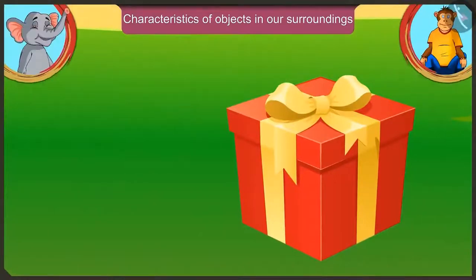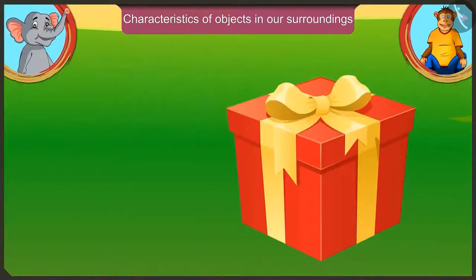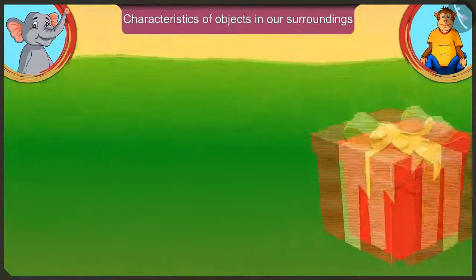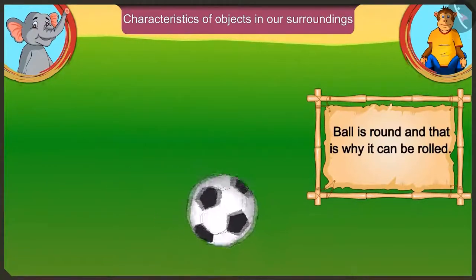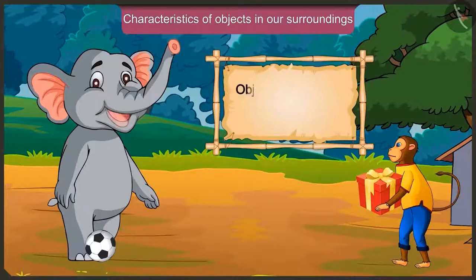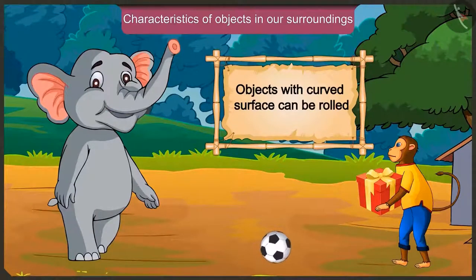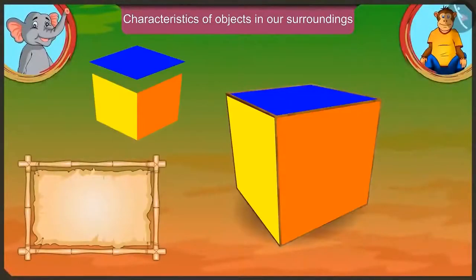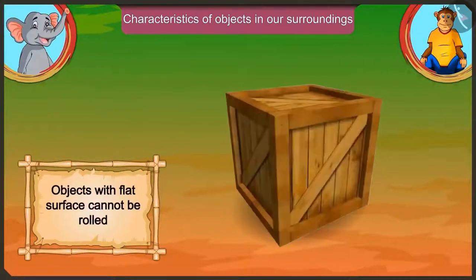Yes Appu, this box has corners and its surface is also flat, which is why it cannot be rolled. Your ball is round, and that is why it can be rolled. So I have understood that objects which have a curved surface and don't have corners can be rolled, and those objects which have a flat surface cannot be rolled.